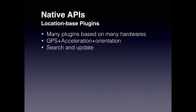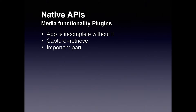These are all location data that we would need for anything related to updating or searching. Media functionality plugins are a large group of plugins that range from media capture plugins for photos, videos, and audio. These plugins are used for capturing and retrieving these media. Since these plugins are an important part of an application, an application is incomplete without them.